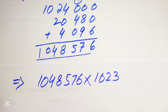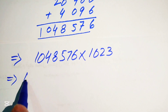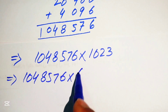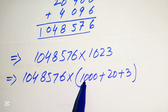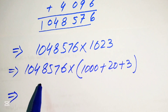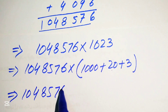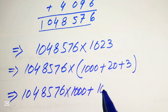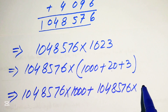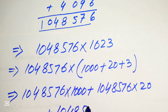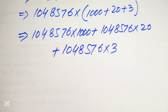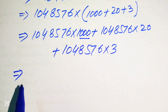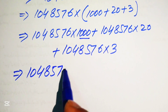We write 1048576. We break 1023 into thousands and hundreds form: 1000 plus 20 plus 3, all multiplied by 1048576. Multiplying by 1000 means we just add three zeros at the end, giving 1048576000.